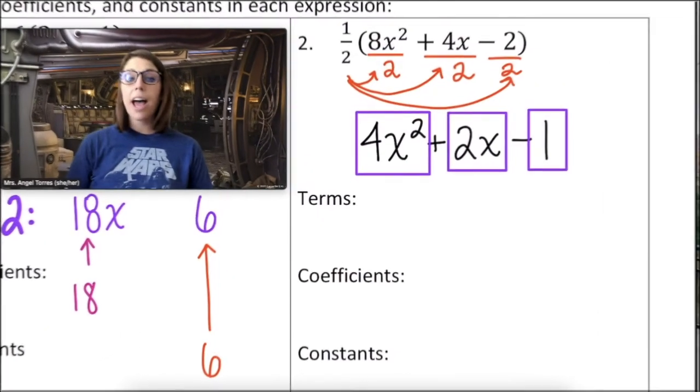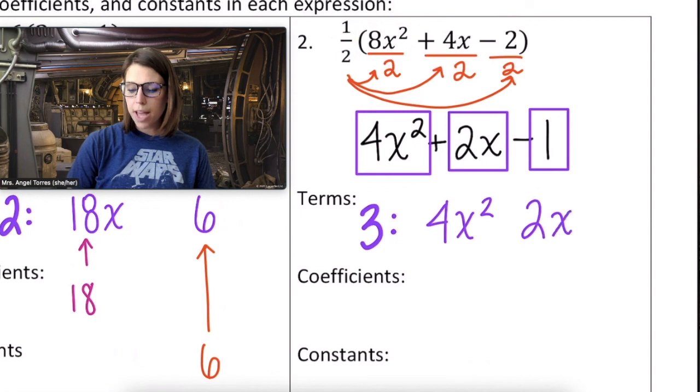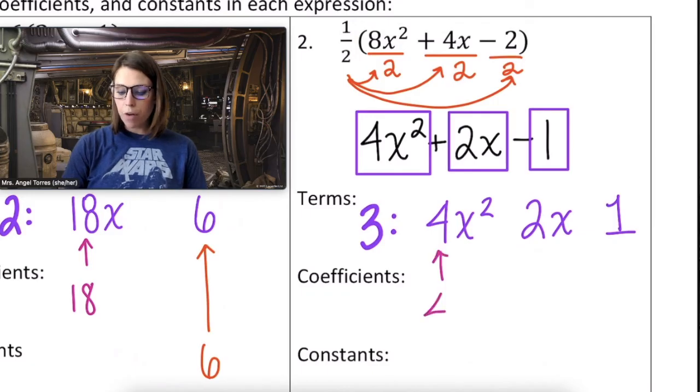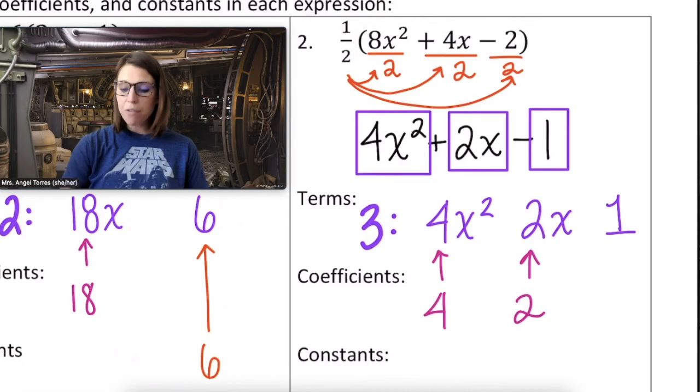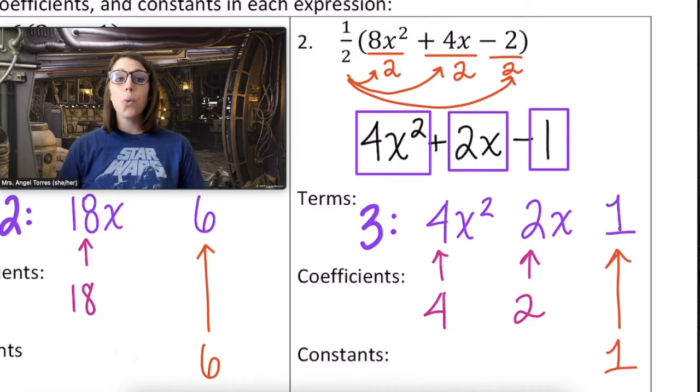I count one, two, three terms total. They are 4x squared, 2x, and 1. That means our coefficients here are 4 and 2, and finally our constant at the end is 1.